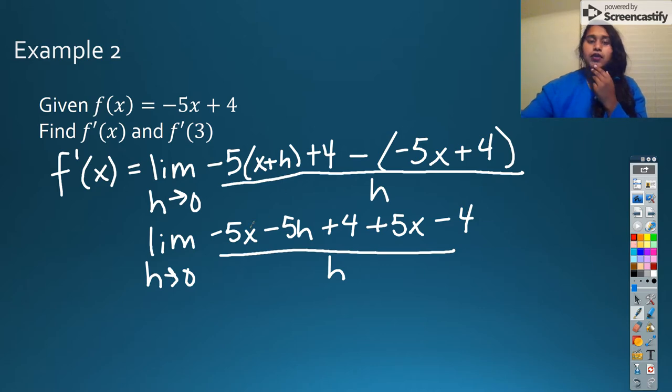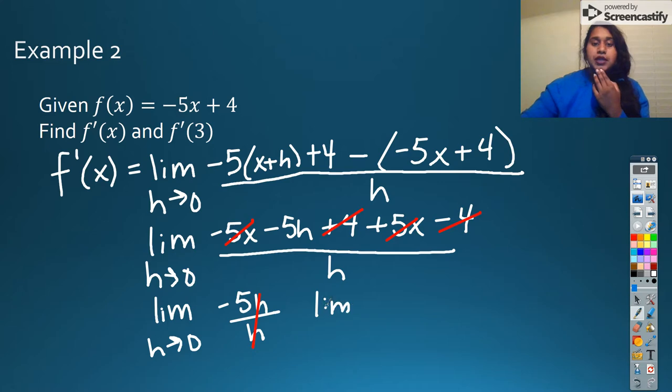And I'm going to go ahead and cancel away all the stuff that is allowed to cancel. Those will cancel, that will cancel. And I simplify on down. So it becomes the limit as h approaches 0 of negative 5h over h. And now that we're seeing it like this, we can see there's even one more thing I can go ahead and cross out.